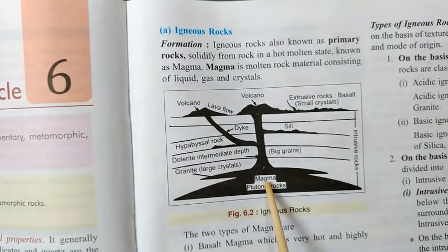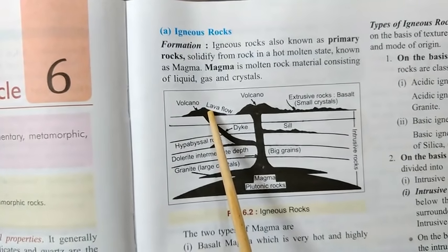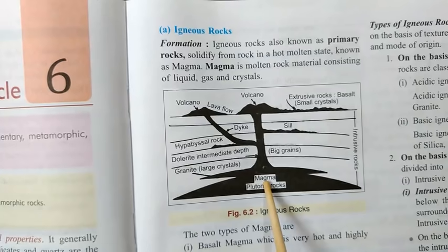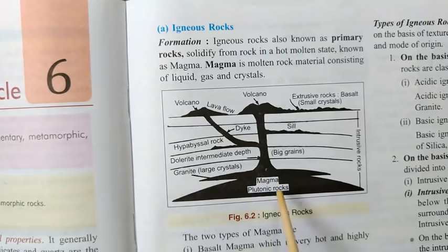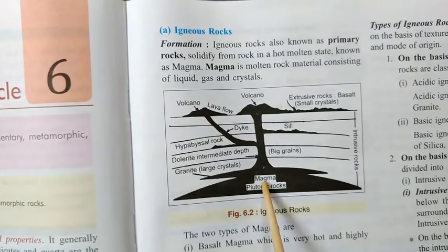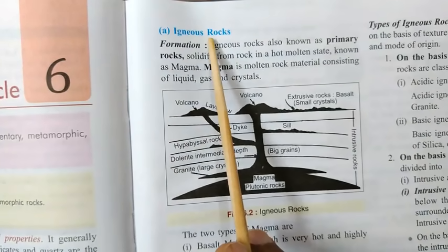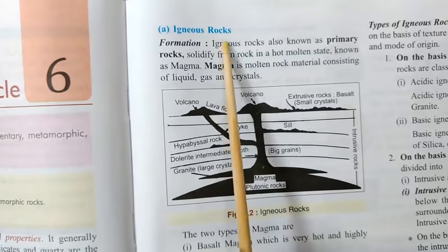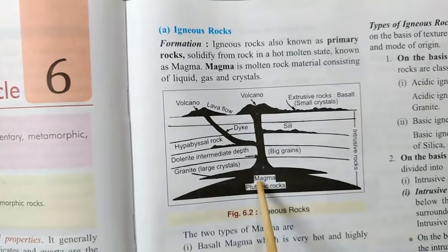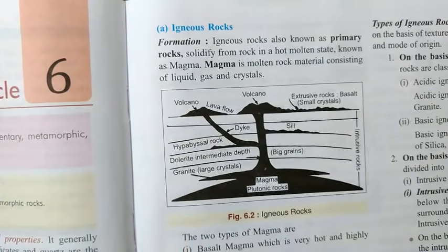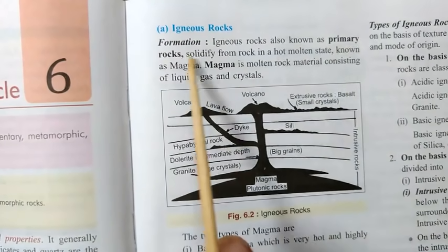When this magma comes above the surface, we call it lava — that is the difference in the words. When this magma solidifies, it forms igneous rocks. This is why igneous rocks are formed by the solidification of magma, and that is why we call them primary rocks.